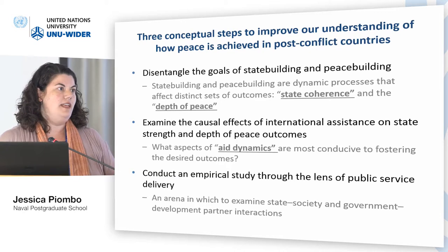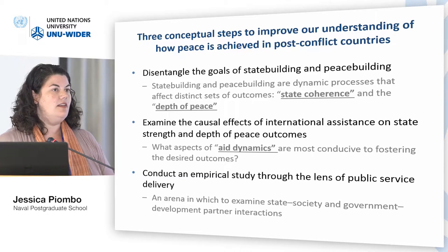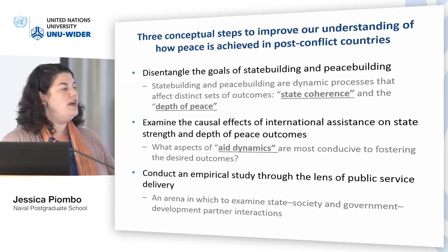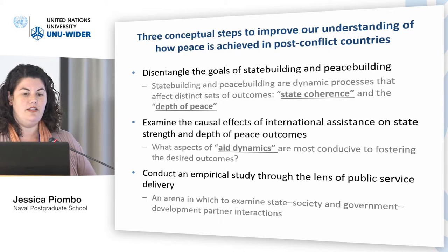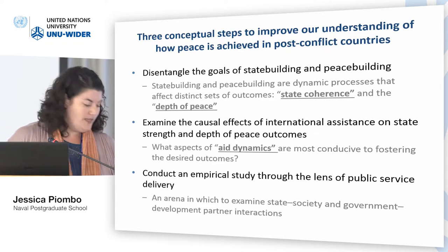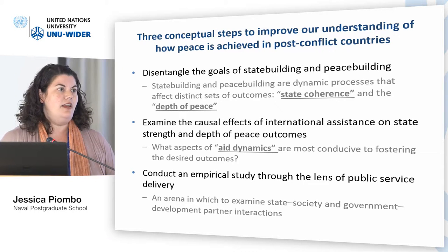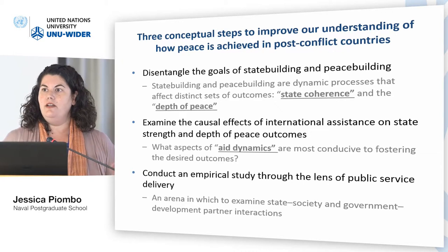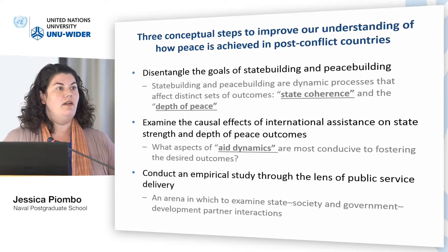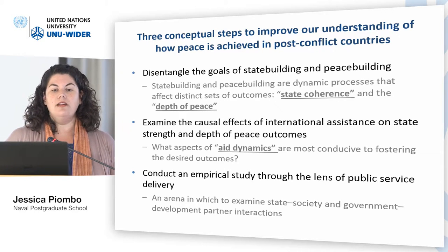We're trying not to just say state capacity or peace writ large, but state capacity in specific sectors of three countries that we're looking at. We look at public service delivery because of this concept about the social contract between the state and society. Public service delivery is one of those places where, when you think about what states do — yes, they provide authority, they provide rule of law — but in a lot of contexts, we also expect them to provide a basic minimum of education, health care, and infrastructure. So how are states doing that?